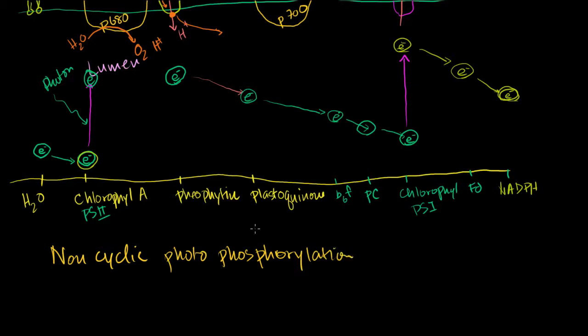This idea of an electron going from water to NADPH is called non-cyclic photophosphorylation. It's called non-cyclic because you're not reusing the same electrons over and over again. The electrons start off, depending how you view it, in chlorophyll or the water, and they end up in the NADPH.